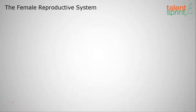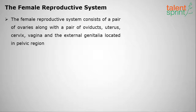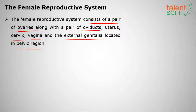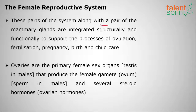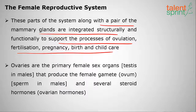Moving on to the female reproductive system: it consists of a pair of ovaries, a pair of oviducts, uterus, cervix, and vagina, with external genitalia located in the pelvic region. These parts, along with a pair of mammary glands, are integrated structurally and functionally to support ovulation, fertilization, pregnancy, birth, and child care.